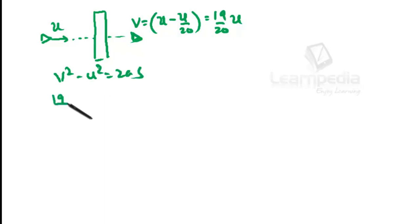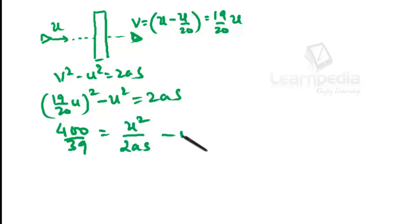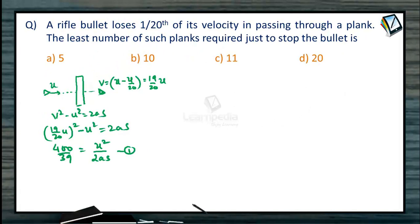We can write (19/20 u)² - u² = 2as. So -400/39 = u²/(2as). Let me call this equation as equation 1.